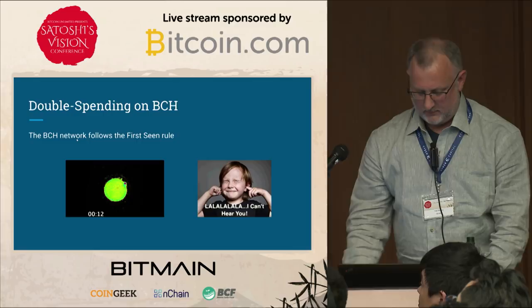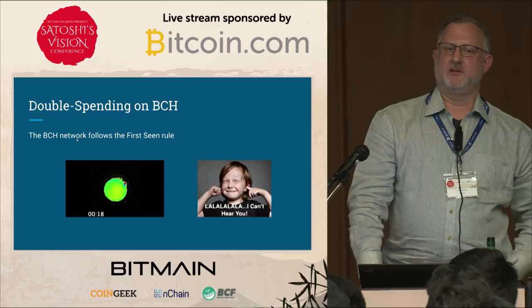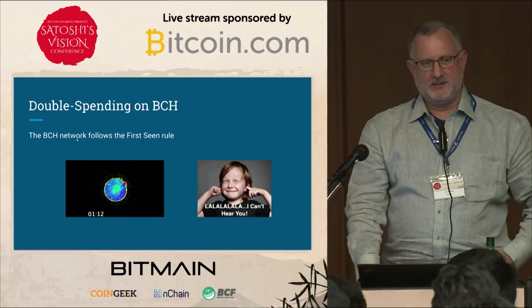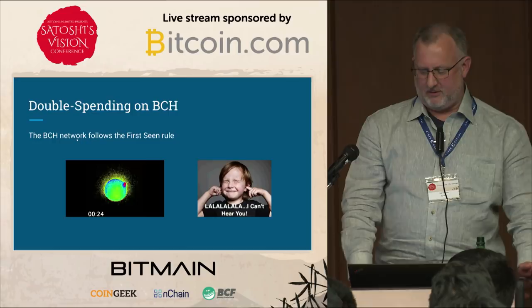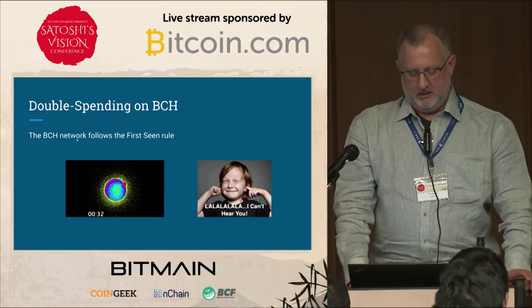We have a rule called 'first seen.' The first-seen rule is simple: once a node has seen a transaction that spends a certain UTXO, it silently ignores any other unconfirmed transaction that spends that same coin. If nodes are honest, this strategy would completely solve the double spend problem — we simply ignore the double spends — with one small problem, and that problem is timing.